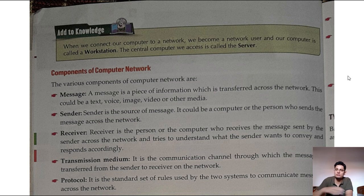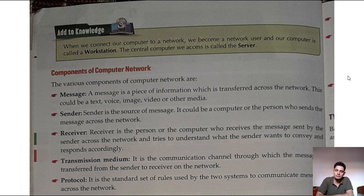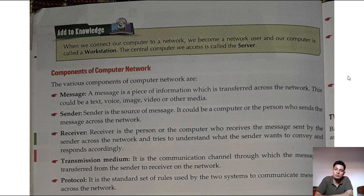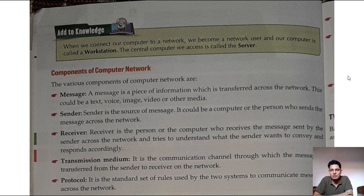Now we move to page six: components of a computer network. The various components are: message, sender, receiver, transmission medium, and protocol. A message is what we want to communicate. The sender is the person or computer sending the information. The receiver is the person or computer receiving the information. Transmission medium is the channel by which the information is communicated.